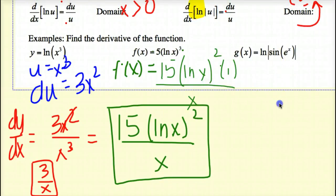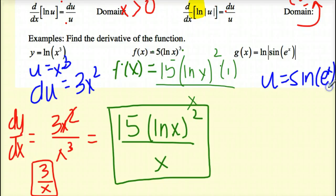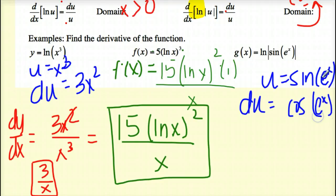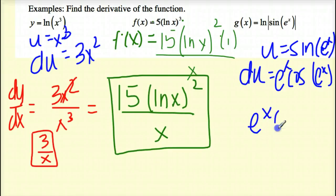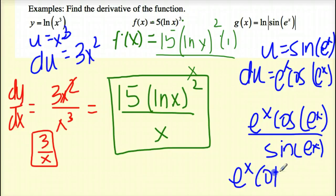Over here I have an absolute value, which means I can use this any time whatever is after ln is not equal to 0. So my u has to equal sine of e to the x, which means my du is the derivative of sine, which is cosine, times e to the x, times the derivative of e to the x, which is e to the x. So du is e to the x cosine of e to the x, and u is sine of e to the x. Simplifying, cosine over sine gives me e to the x times cotangent of e to the x.